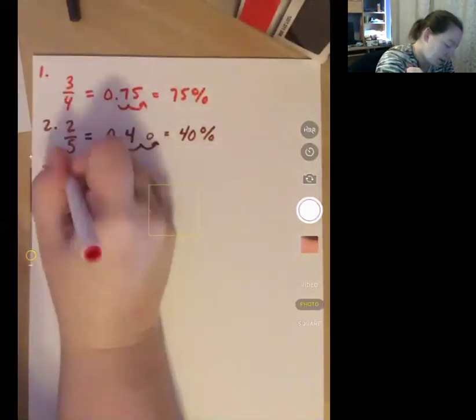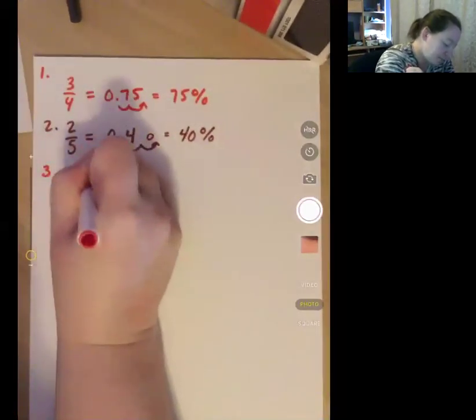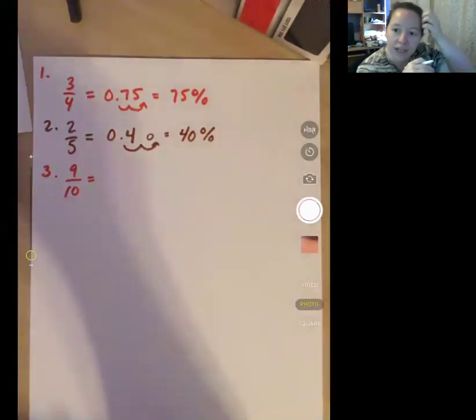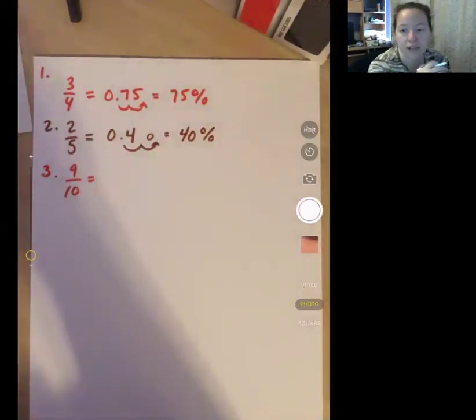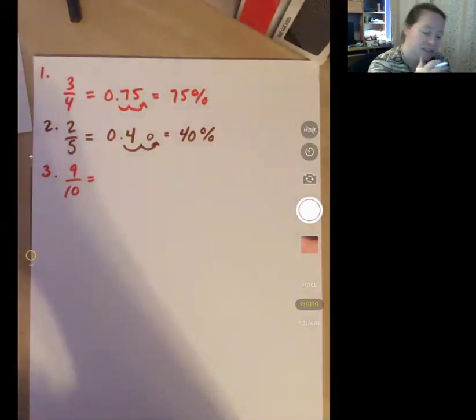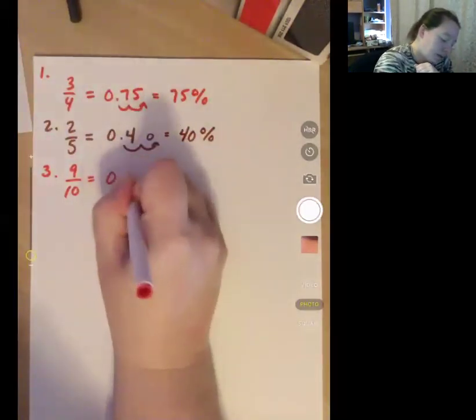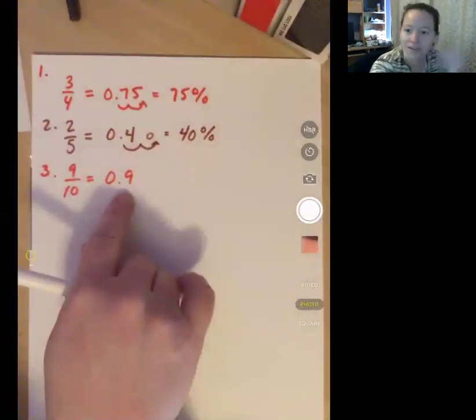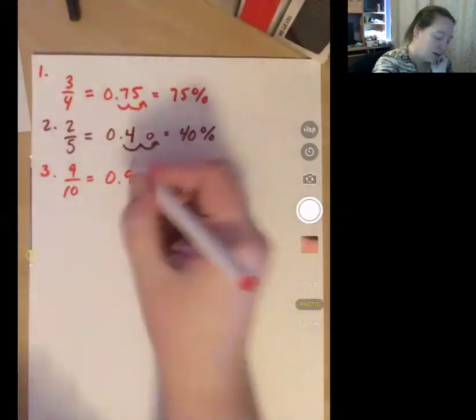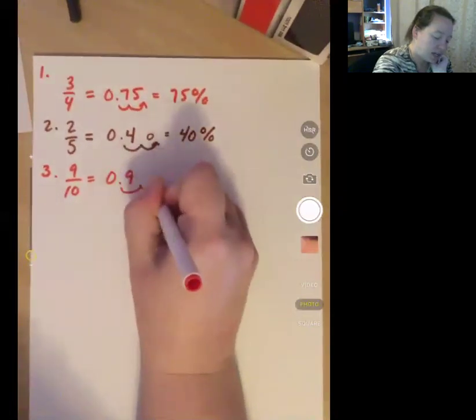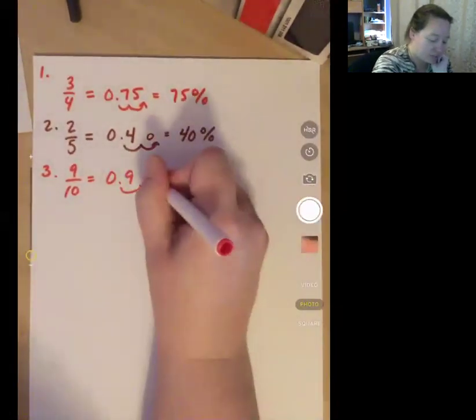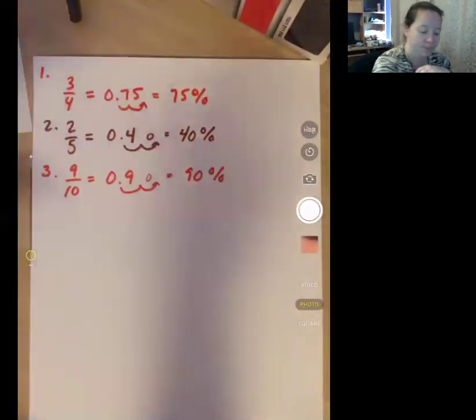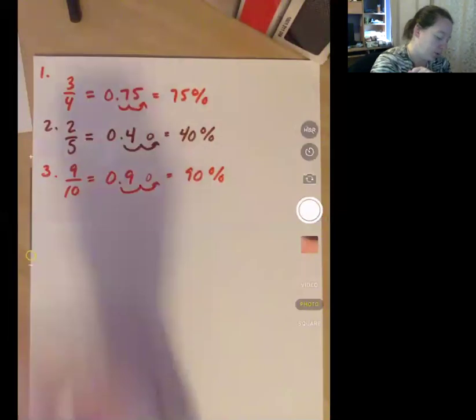Number three, 9 over 10. I can plug it into the calculator. 9 divided by 10 is 9 tenths. I still move it two times. I add a zero because I need that. So it ends up being 90%.